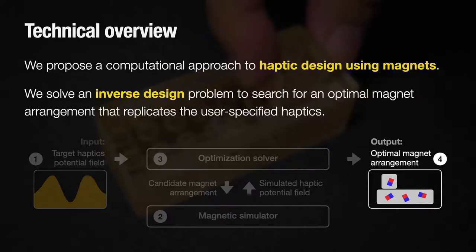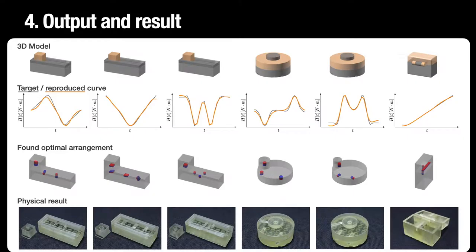This is handled by the penalty method and see the paper for detail. Finally, as a result, we got the optimal magnet arrangement, which is estimated to fulfill the haptic potential curve. In the video material, you can find whole videos of optimization and visualization for six applications.